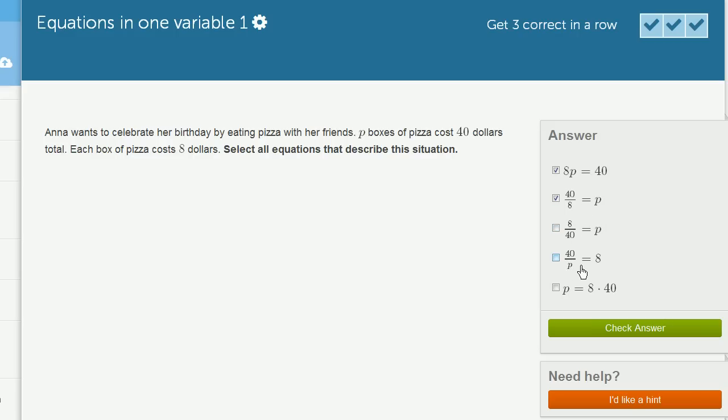Over here we have 40 divided by P is equal to 8. So if I just said, hey look, I spent $40 on pizza and I bought P boxes. How much did each of those boxes cost? I would say, well, I would take 40 divided by P to figure out how much each of those boxes cost. And then they tell us that that must be equal to 8, that each box equals 8. So this seems consistent with what we just read. And you can algebraically manipulate any of these top two to get to this one right over here.